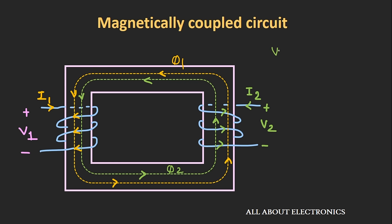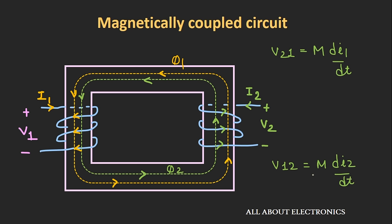V21 is the voltage developed in coil 2 due to the current flowing in coil 1; it can be given as M·di1/dt, and its polarity is positive. Similarly, V12 is the voltage induced in coil 1 due to the current flowing in coil 2; it can be given as M·di2/dt. Here both voltages will be positive.